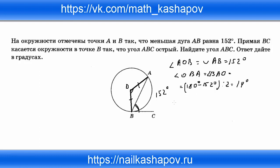Мы знаем, что BC — касательная к окружности. Касательная перпендикулярна радиусу окружности в точке касания, поэтому угол OBC = 90 градусов. Чтобы найти искомый угол ABC, мы вычитаем: 90 − 14 = 76 градусов.